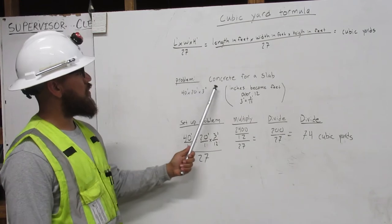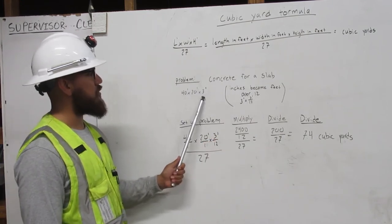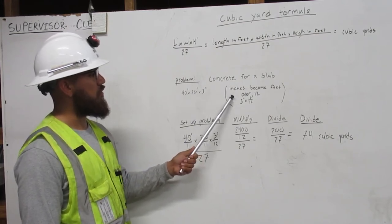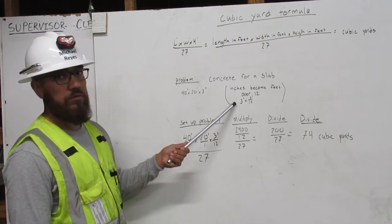Problem: concrete for a slab, 40 feet times 20 feet times 3 inches. Inches become feet over 12. 3 inches equals 3 foot over 12.